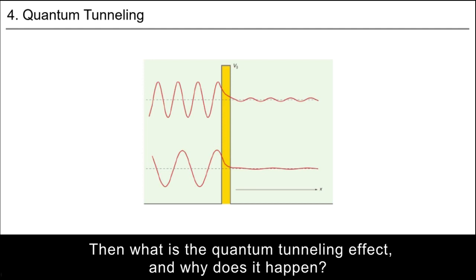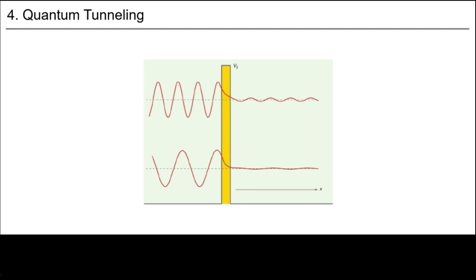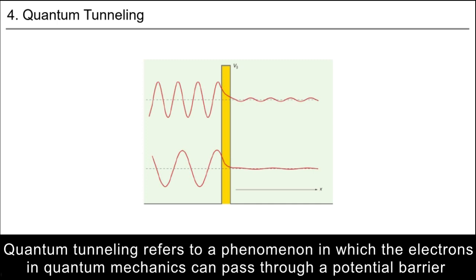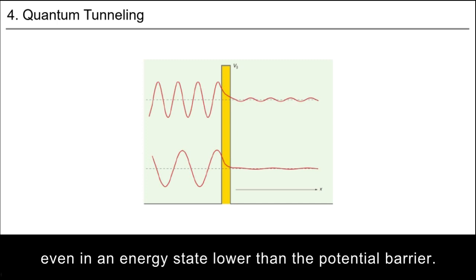Then, what is the quantum tunneling effect and why does it happen? Quantum tunneling refers to a phenomenon in which electrons in quantum mechanics can pass through a potential barrier even in an energy state lower than the potential barrier.